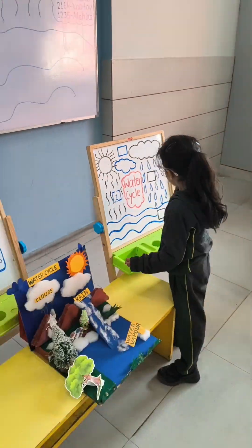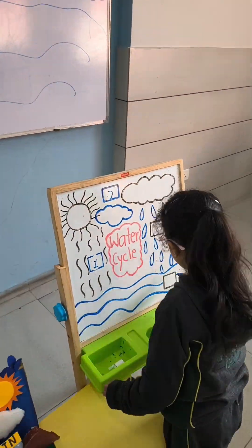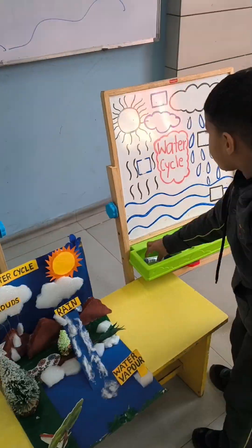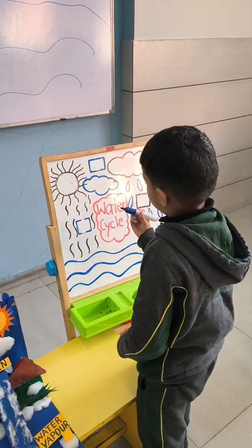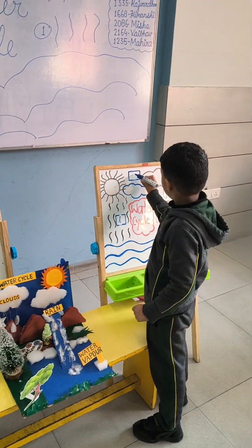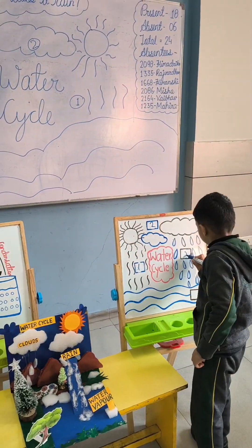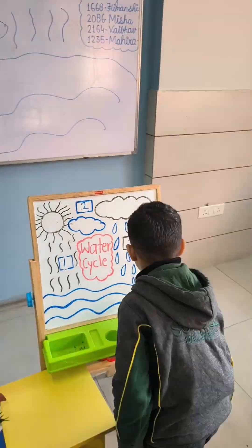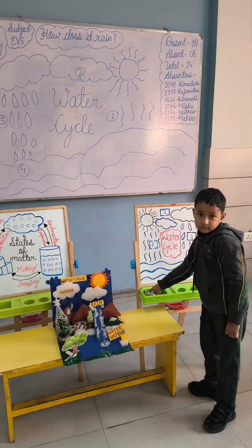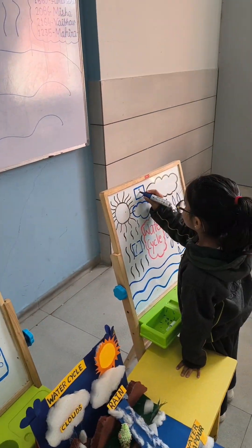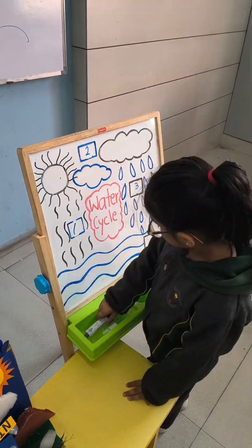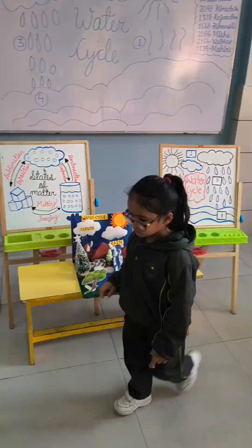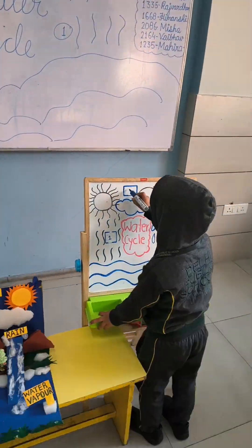Evaporation, water turns to vapor. Condensation, vapor turns to drops. Precipitation, drops fall down, and they collect all over the ground.